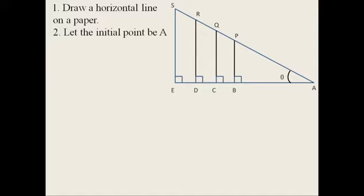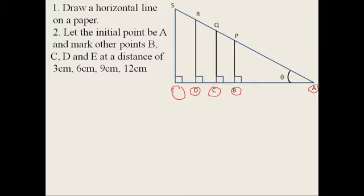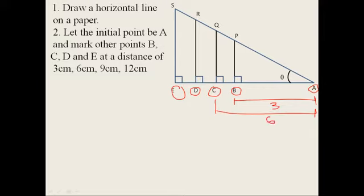Let the initial point be A. Mark other points B, then C, then D, then E, at distances of 3 cm, 6 cm, 9 cm, and 12 cm respectively from A. That means A to B is 3 cm, A to C is 6 cm, A to D is 9 cm, and A to E is 12 cm.